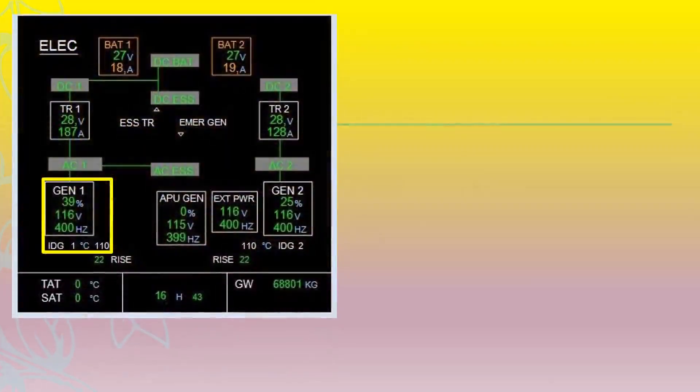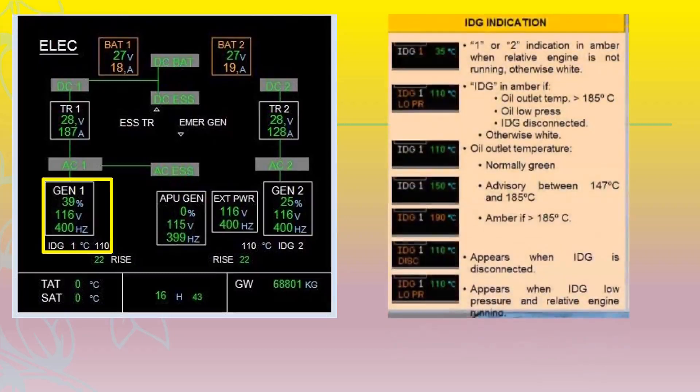IDG 1 or 2 indication shows in amber when the relative engine is not running, otherwise white. IDG is in amber if the oil outlet temperature is more than 185 degrees Celsius, or when the oil pressure is low, or when the IDG is disconnected. Oil outlet temperature is normally green, with an advisory range between 147 to 185 degrees Celsius, and amber if more than 185 degrees Celsius.